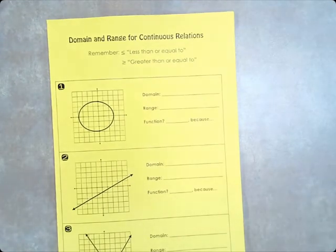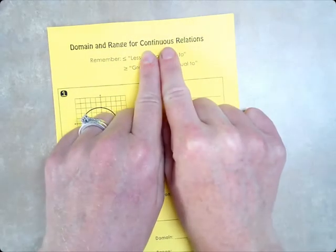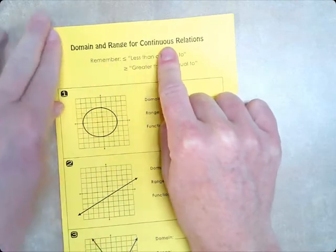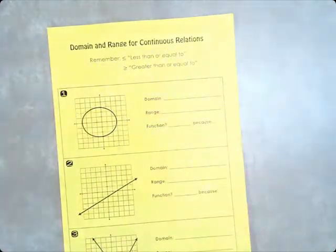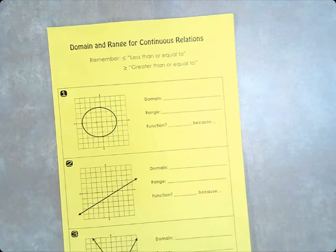So, we are going to learn about domain and range of continuous relations. Remember with continuous, there is a line or a curve that connects points. With discrete, we had just a scatter plot, and we just listed the x values and the y values.